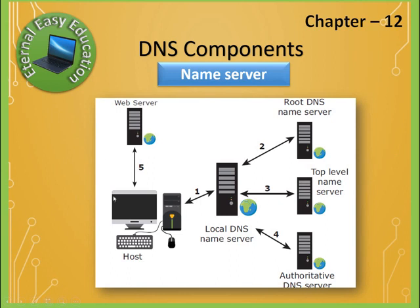How it works: a host requesting content first sends the query to the local DNS name server, which then passes it to the root DNS name server, then to the top-level and authoritative DNS servers, and sometimes to the web server as well. The content is searched across these split servers and the particular result is returned to the user's computer.